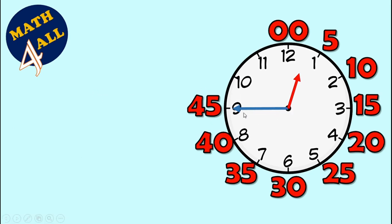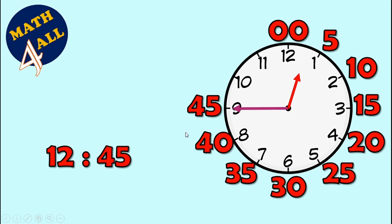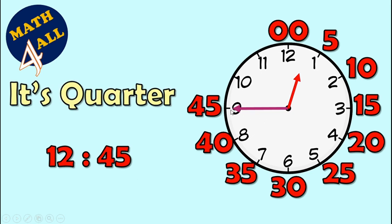When the long hand is on 9 and the minutes hand shows the short hand between two numbers and we didn't reach one yet, so we're still on 12. It's 12 and 45 minutes. On the digital clock, and on the analog clock you will say it's quarter to 1 — it means we still have 15 minutes, or quarter of an hour, to reach 1 o'clock.